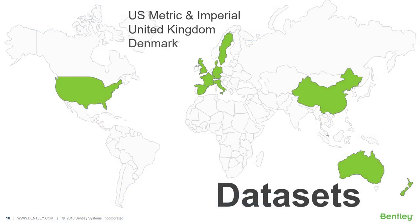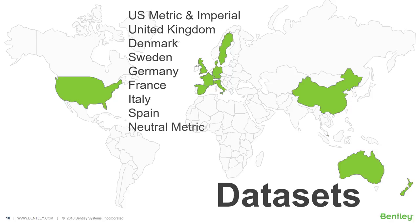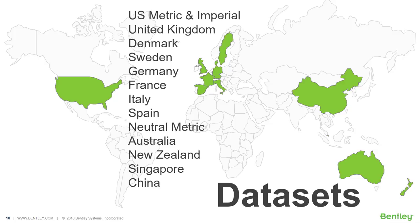AXM Building Designer has a vast number of datasets available, namely US metric and imperial, United Kingdom, Denmark, Sweden, Germany, France, Italy, Spain, neutral metric, Australia, New Zealand, Singapore, and China.